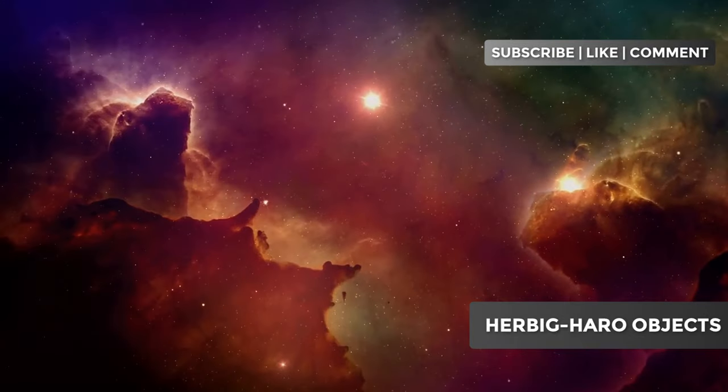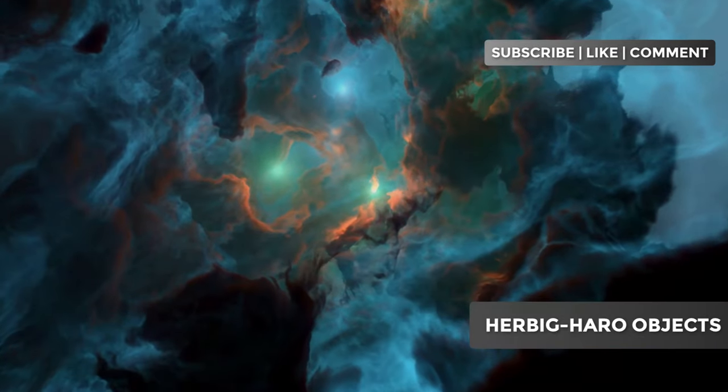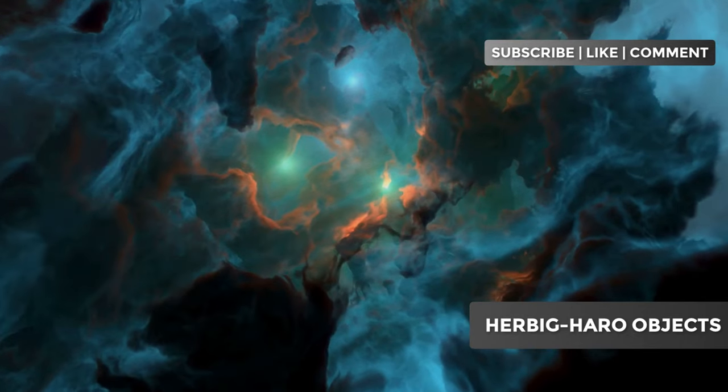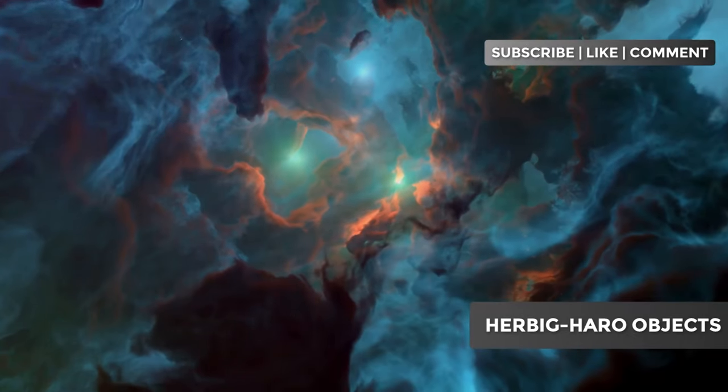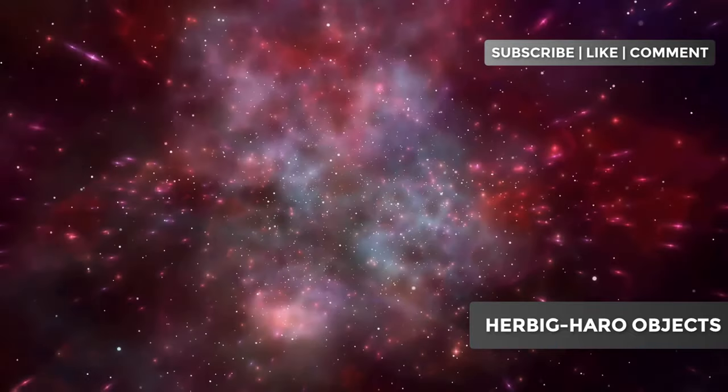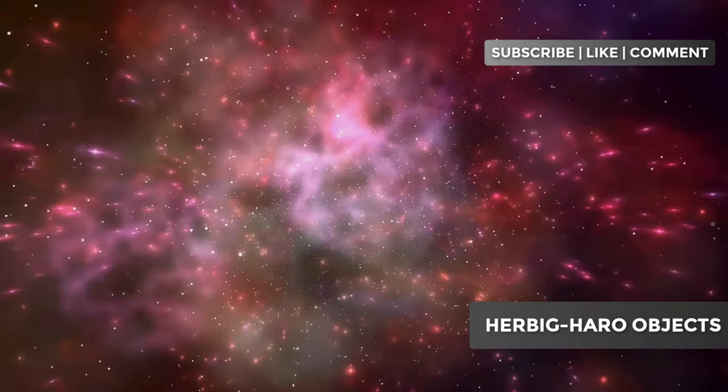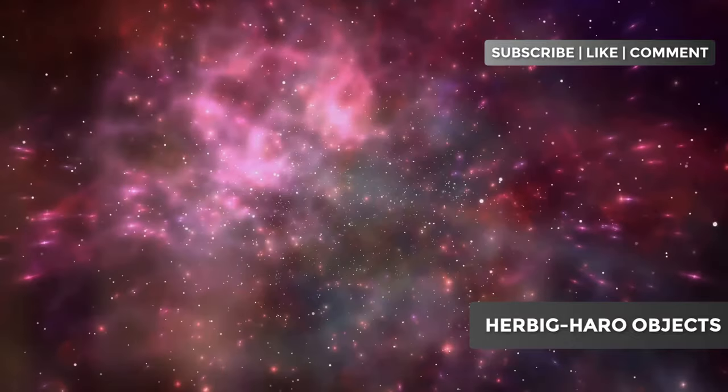The color palette of HH objects is equally fascinating. While many appear in shades of red due to the emission of ionized hydrogen, it's also possible to observe hues of blue and green. These additional colors result from the presence of other elements, such as oxygen and sulfur, which are excited by shock waves.